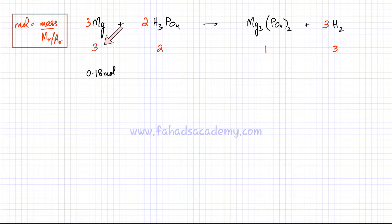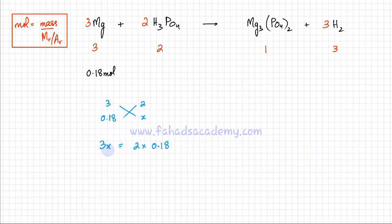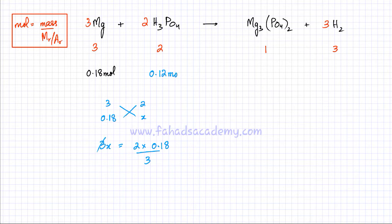Looking at the ratio, three magnesiums react with two phosphoric acid — that's the simplest ratio in which these two are reacting. So if I have 0.18 moles, that would need x amount of phosphoric acid. Using cross multiplication: 3x = 2 × 0.18, divide by 3, which gives 0.12 moles. So 0.12 moles of phosphoric acid are needed to react with 0.18 moles of magnesium, using the ratio from the chemical equation.